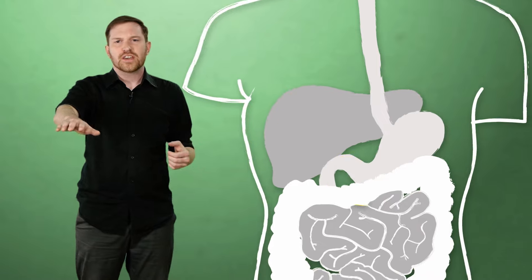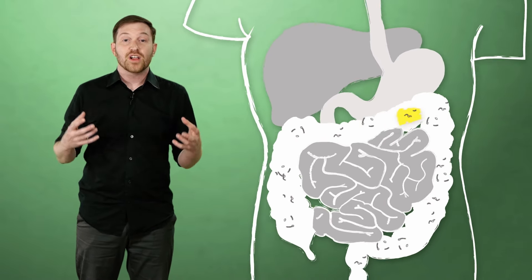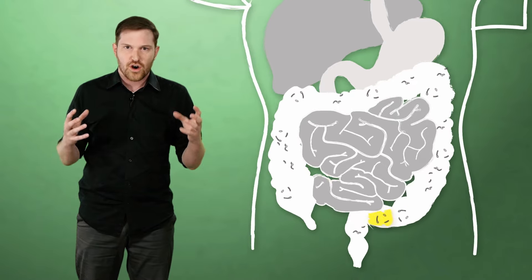If you're lactose intolerant, then you lack the enzyme that breaks lactose into sugar molecules for the bloodstream. Without this, lactose just breezes through your stomach and small intestine into your large intestine, where it becomes the special of the day for billions of hungry bacteria. Those guys love lactose, and if you're not going to digest it, they will.